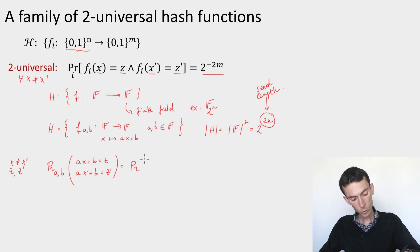This is the same as the probability over a and b that b is equal to z minus ax, and then I can replace b in the other equation, and I will get a(x prime minus x) equals to z prime minus z.